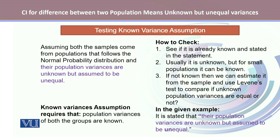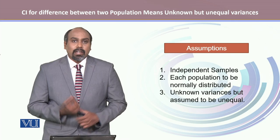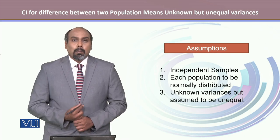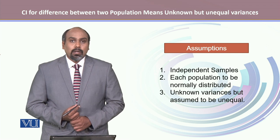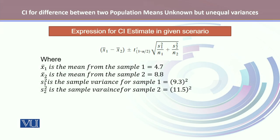Thirdly, we test whether the variances are known or not. In this special case, variances are unknown to us. Usually they are unknown, but for small populations it can be known. If not known, we can estimate from the sample and use Levene's test to compare whether the unknown population variances are equal or not. However, in this case we don't need to use Levene's test or the F-test, because the statement clearly states that population variances are unknown but assumed to be unequal. Hence, all three assumptions are verified: our samples are independent, they come from normally distributed populations, and their variances — though unknown — are unequal.